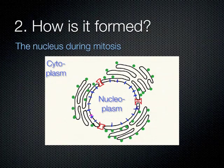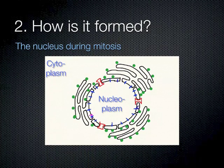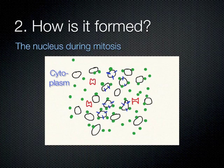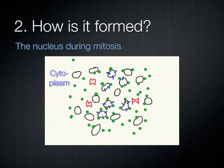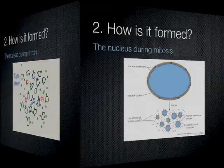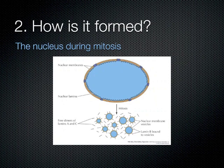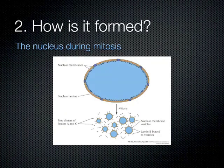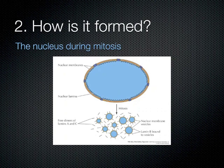During mitosis, the nuclear envelope forms little vesicles distributed throughout the cell. Vesicles that were facing the inside of the nucleus will contain proteins specific to the inner nuclear membrane. The membrane forms vesicles — shown as little balls in the drawing — and the lamins are still attached to those vesicles because they are associated with the proteins specific to the inner nuclear membrane.